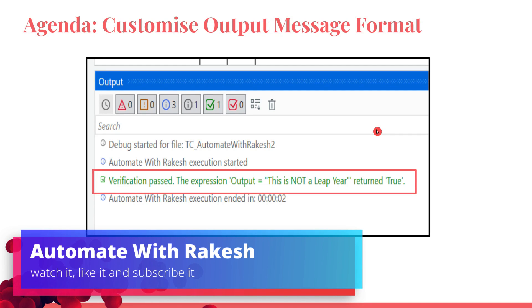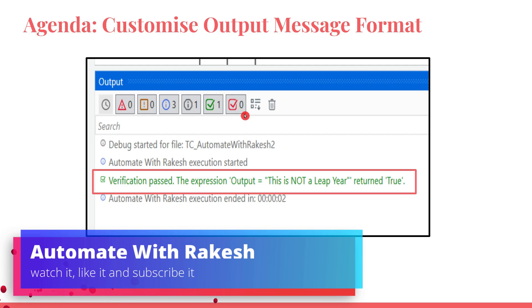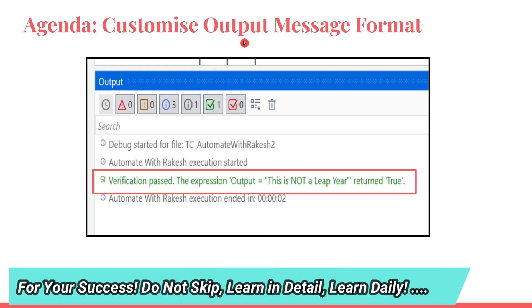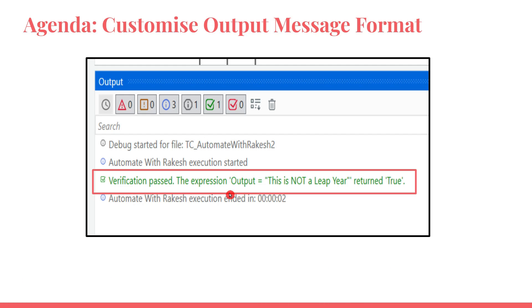Welcome back to Automate with Rakesh. In this video I am going to talk about a very specific technique: can I customize the output message format of the verification activities? By default, when you run the test case for the verification activity, it appears as 'Verification passed, the expression output equals true.' So this is how it is appearing — now is it possible to customize it?